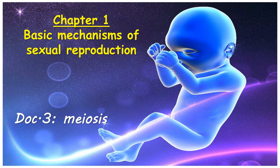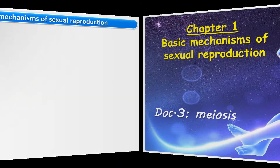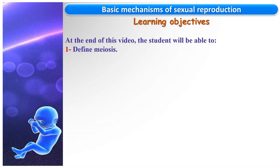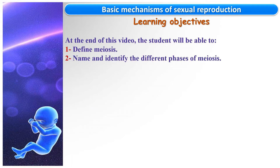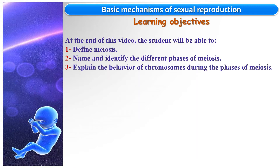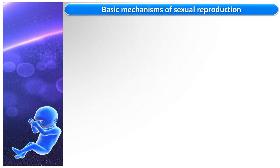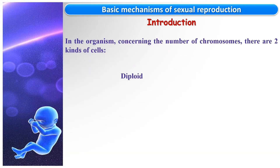This video is about document 3, titled 'Meiosis,' in chapter 1: Basic Mechanisms of Sexual Reproduction. At the end of it, the student will be able to define meiosis, name and identify the different phases of meiosis, and explain the behavior of chromosomes during the phases of meiosis.